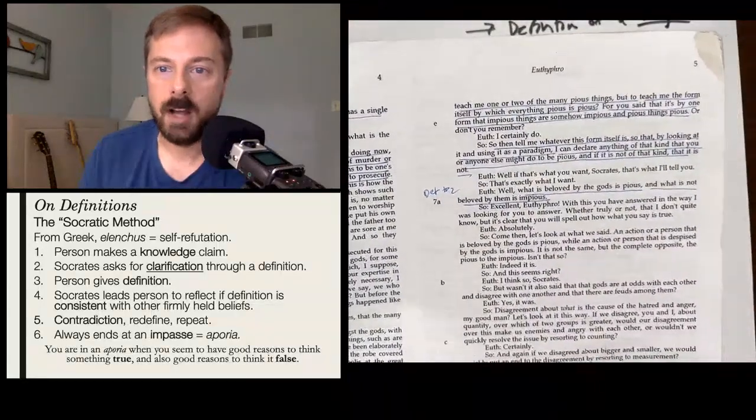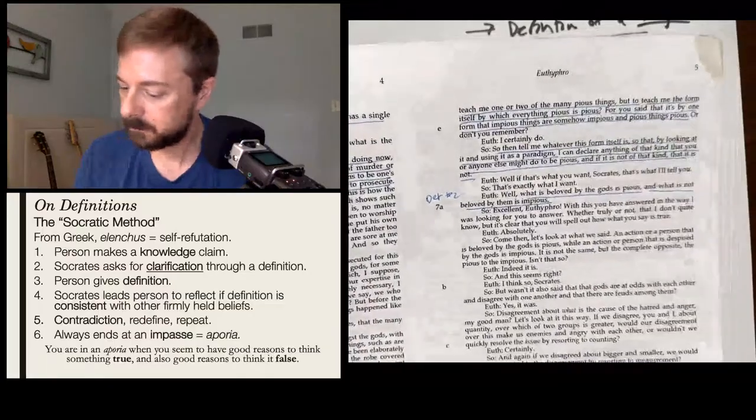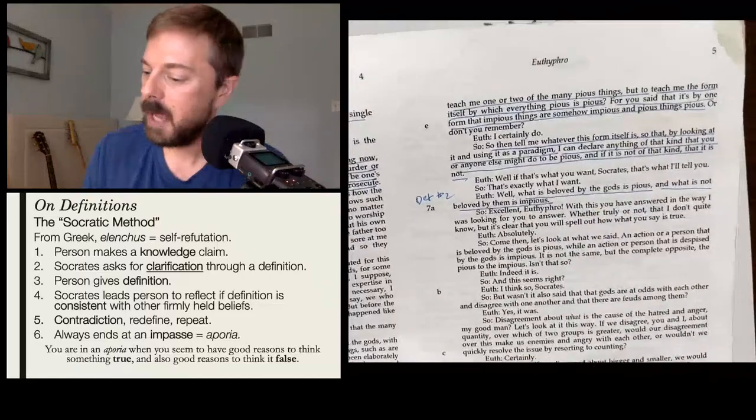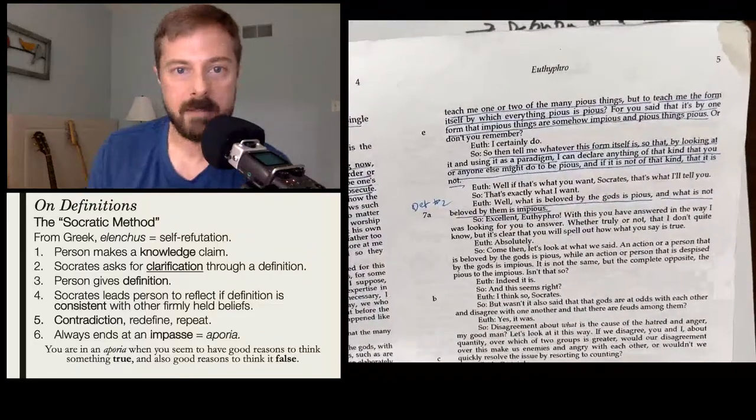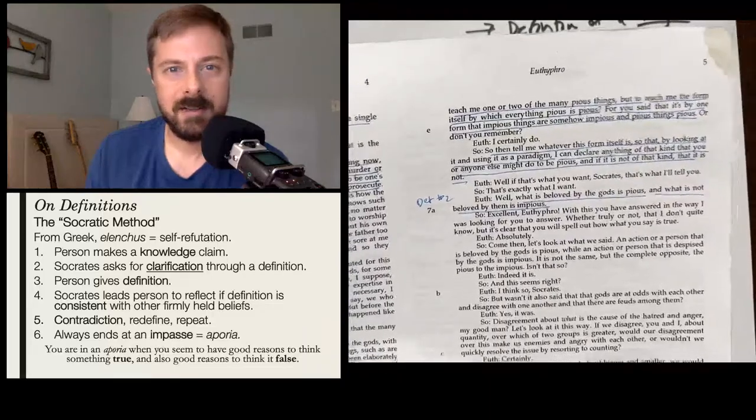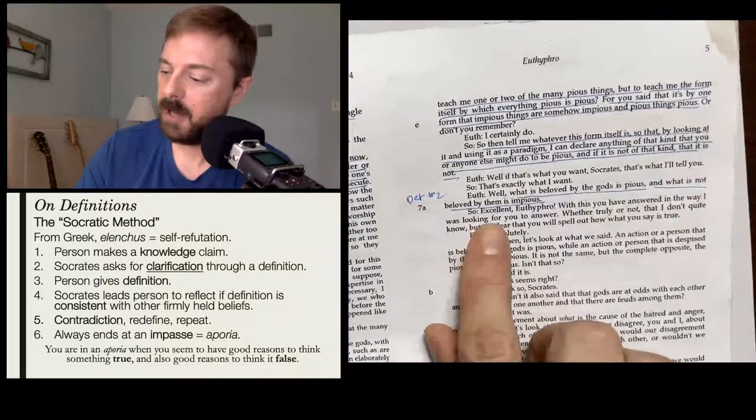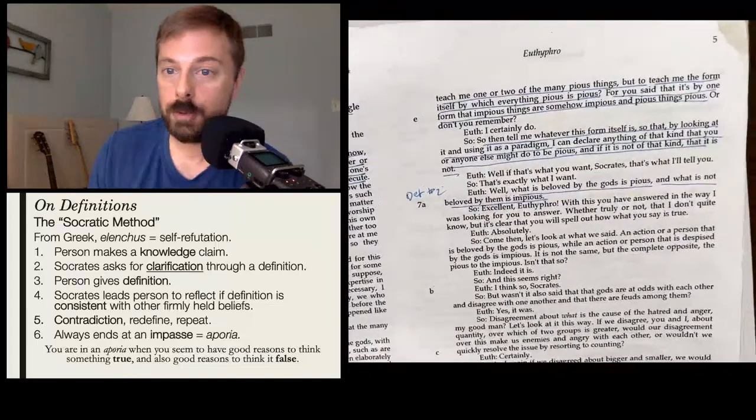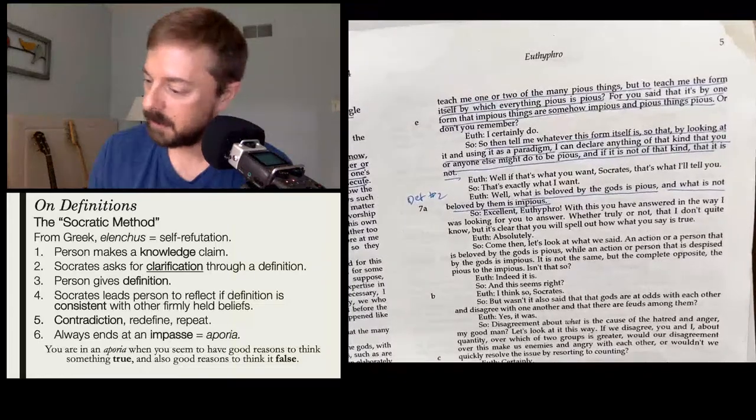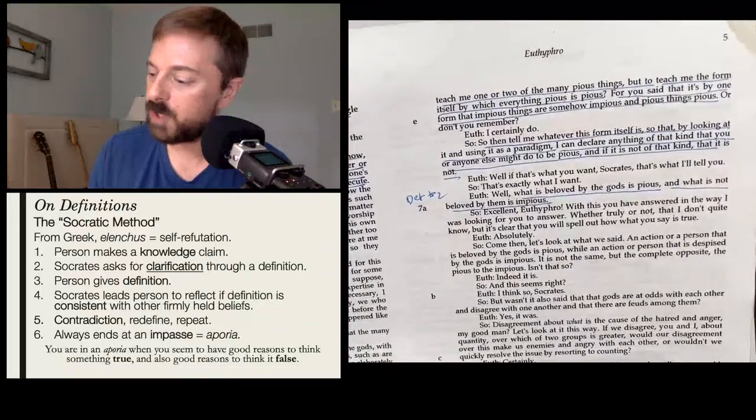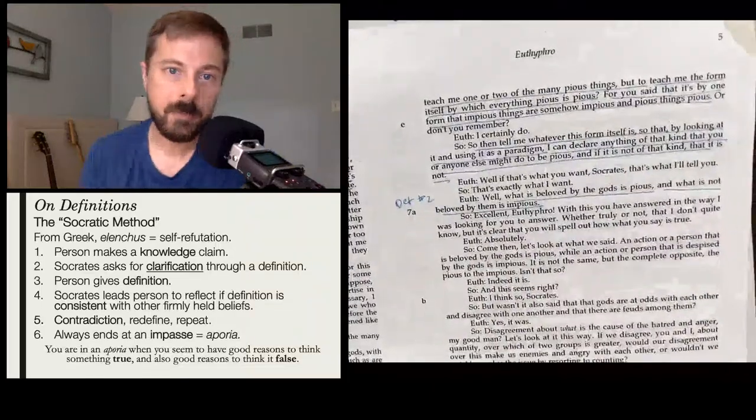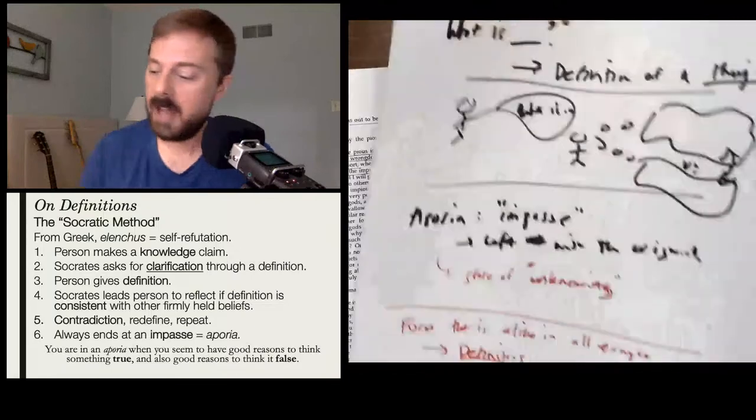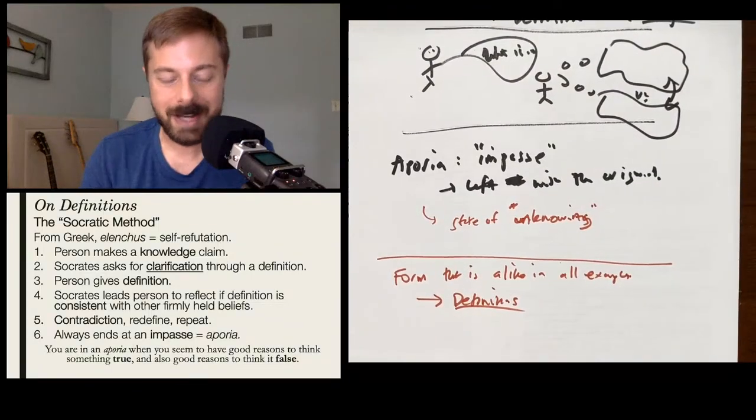Then Euthyphro gives another definition. He says, well, what is beloved by the gods is pious and what is not beloved by them is impious. So Socrates says, excellent Euthyphro, you have answered in the way I was looking for you to answer whether truly or not, that I don't quite know, but it's clear that you will spell out how what you say is true. So now Socrates has taught Euthyphro a lesson that Euthyphro needs to do more than just cite examples.